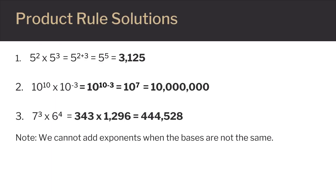Here are the solutions. For the first one, we have five squared times five cubed, which is five to the two plus three power, or five to the fifth power. This is five times itself five times, or 3,125.